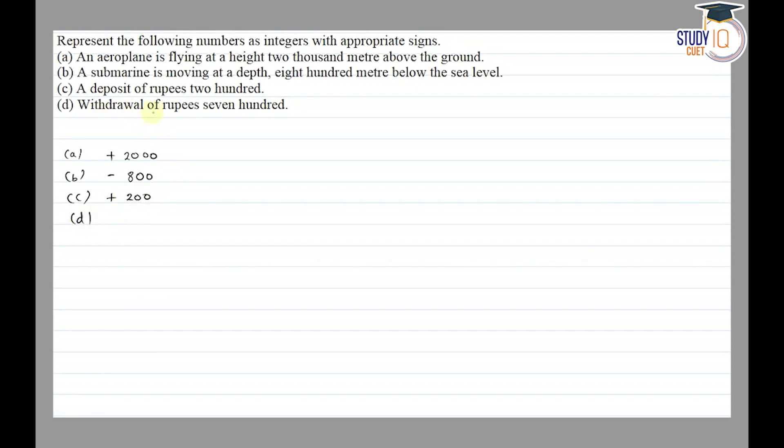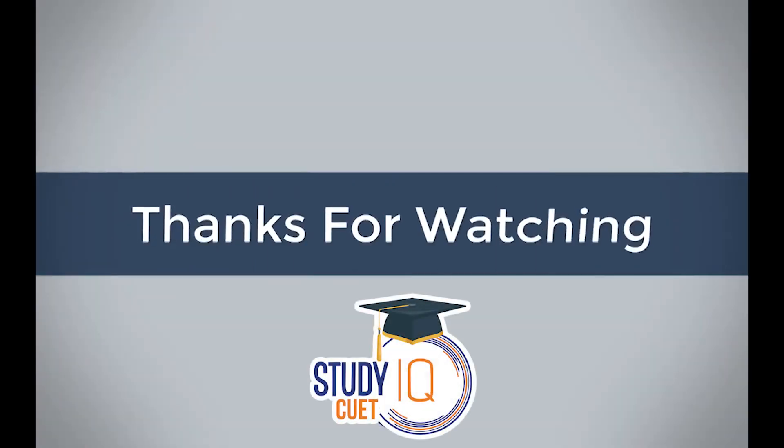Part (d): A withdrawal of rupees 700. For withdrawal we use negative sign, and rupees given is 700, so -700. Thank you.